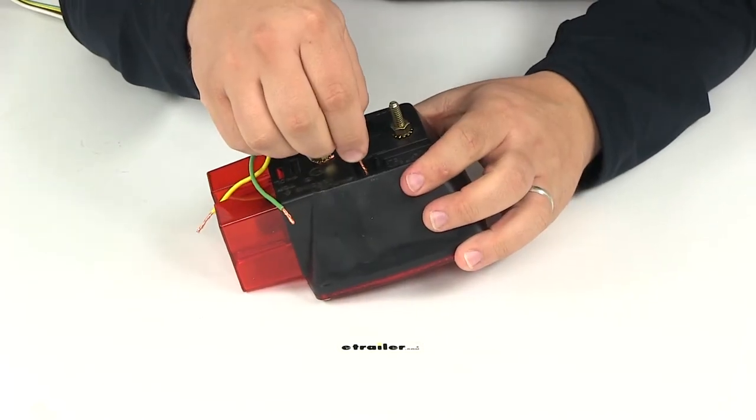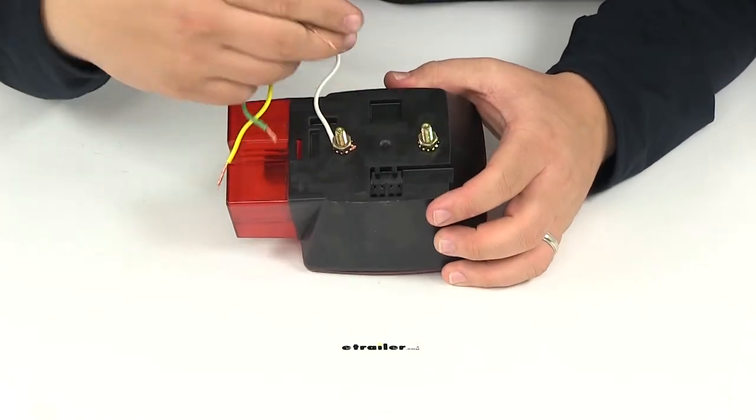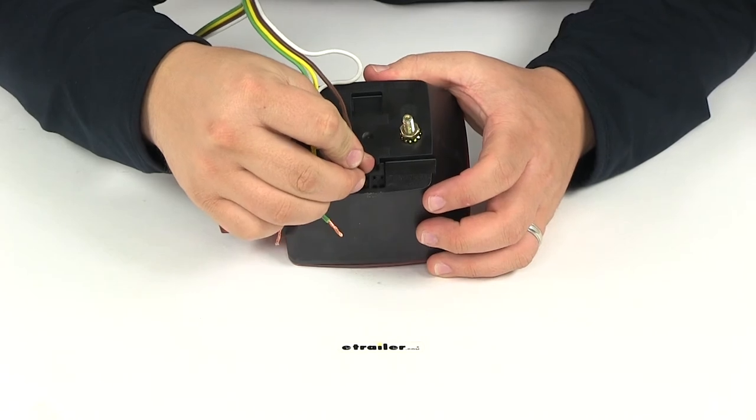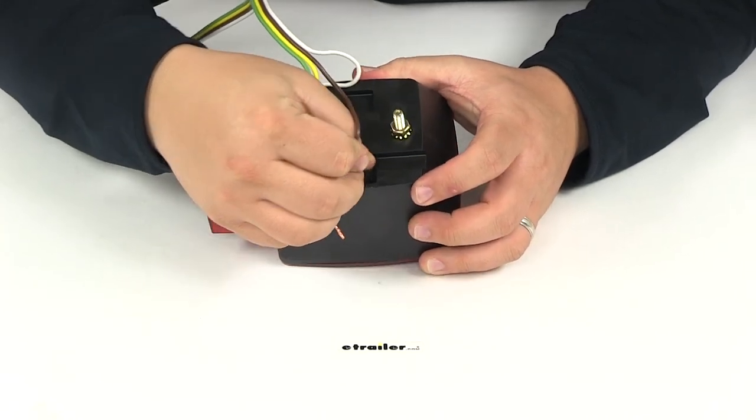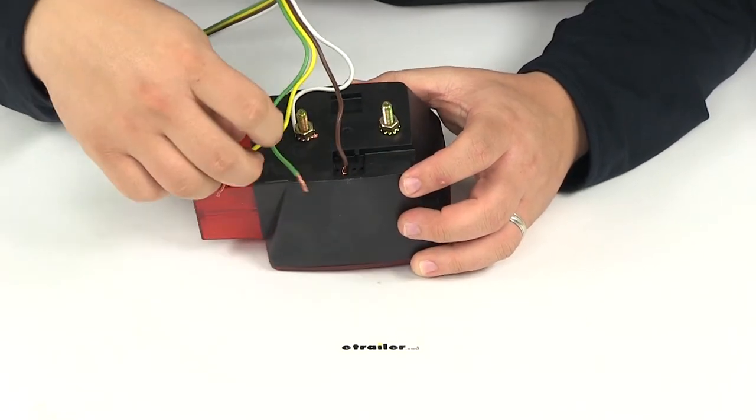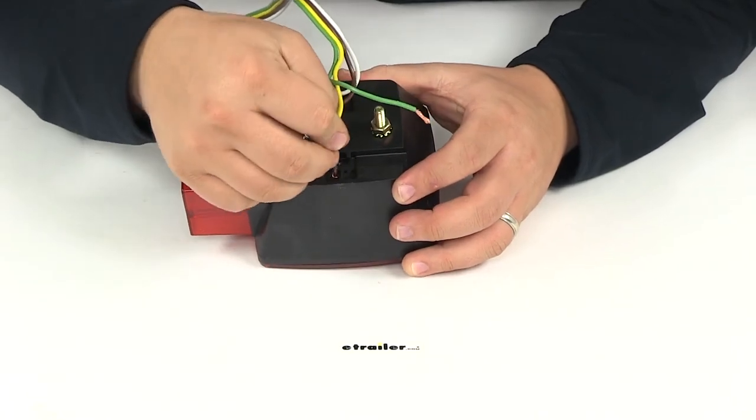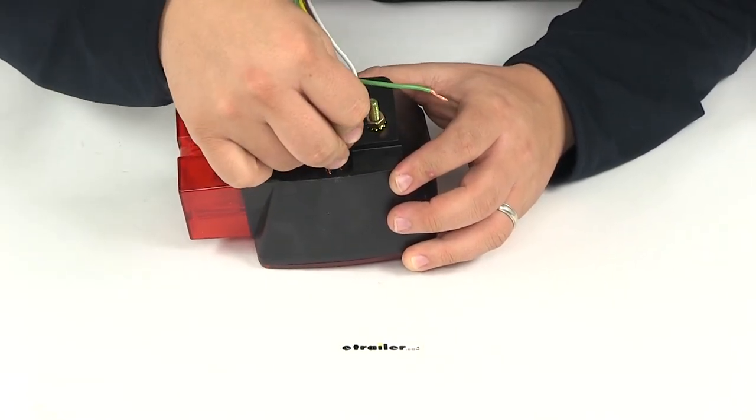To connect the tail light function all you have to do is slide it in the slot here in the back, push it in and it's going to grip and hold itself. Then we'll connect stop and turn signal.